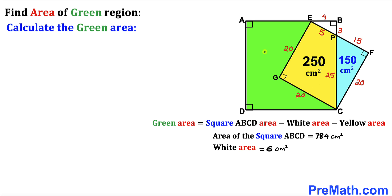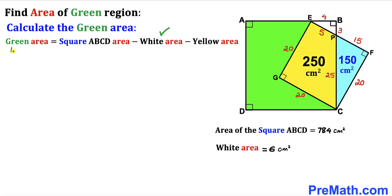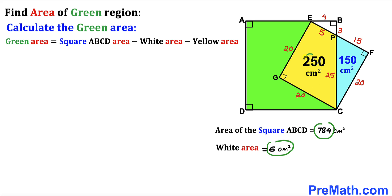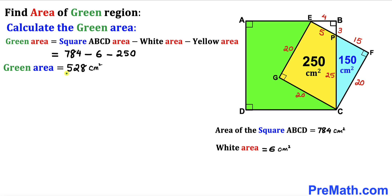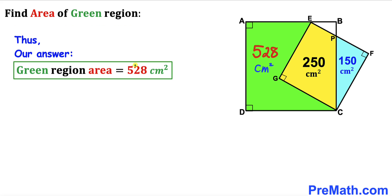For the final step, we calculate the area of the green shaded region. Green area equals the area of square ABCD minus the white triangle area minus the yellow shaded area: 784 minus 6 minus 250 equals 528. So the green area turns out to be 528 centimeter square. Thanks for watching and please subscribe to the channel for more exciting videos.